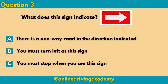Question 3: What does the sign indicate? It's a red background with a white arrow pointing towards the right direction. Does this sign indicate A. there is a one-way road in the direction indicated, B. you must turn left at this sign, or C. you must stop when you see the sign? The correct answer here will be A.